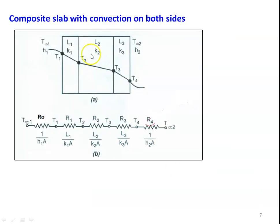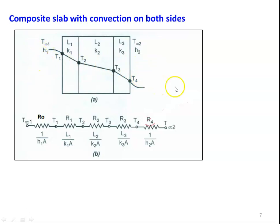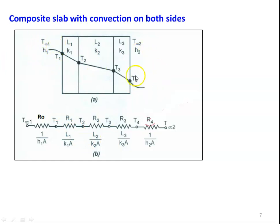Now consider the composite slab with convection on both sides — for example, a boiler wall where hot gases circulate inside and atmospheric air is outside. The same slab configuration now has convection on both sides. Hot gases are on the left side, with different insulating layers, and atmospheric air is outside. To minimize heat transfer, we need sufficient insulation thickness. There are now convection resistances on both sides in addition to the conduction resistances of the three slabs.